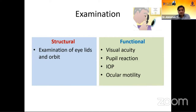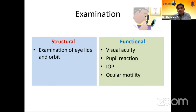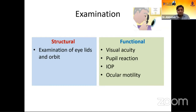Examination can be broadly divided into structural examination — using a torch to see the overall structure of eyelids and orbit — and functional examination, which includes visual acuity, pupillary reaction (especially in closed blunt injury), and IOP. IOP could be raised in phacoanaaphylactic or phacoantigenic conditions, normal in a sealed wound, or low in cases of cyclodialysis or ciliary body shutdown. Ocular motility should also be checked for orbital fracture.